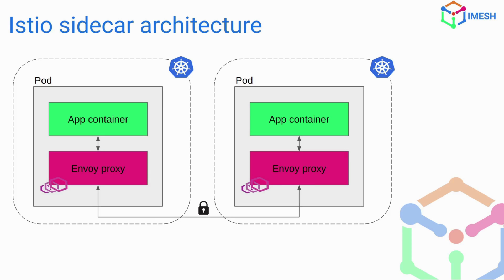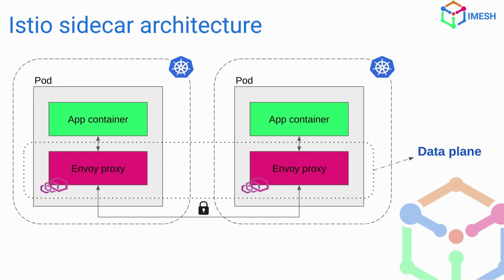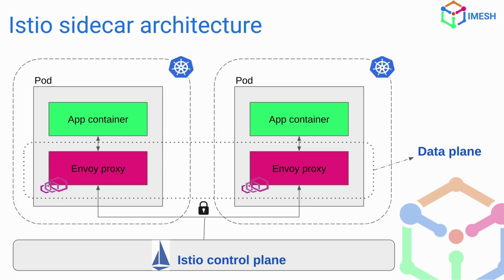Istio also supports MTLS — if you enable it, the communication between the Envoy proxies will be MTLS enabled. The Envoy proxies themselves form the data plane, and we have Istio D as the control plane, which manages pod injection and everything related to the entire service mesh.